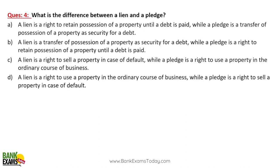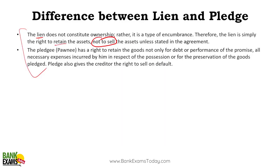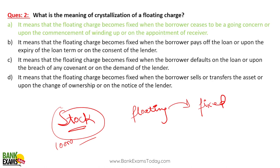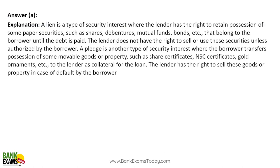Revisiting the difference between lien and pledge: lien is on paper security while pledge is on movable goods. A lien is a right to retain possession until the debt is paid, while a pledge is a transfer of possession of property as security for a debt. In pledge, the pledgee can sell off the security.